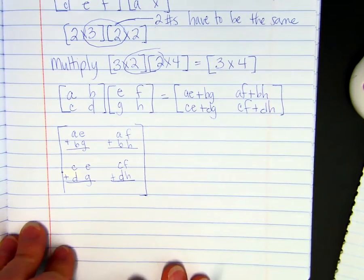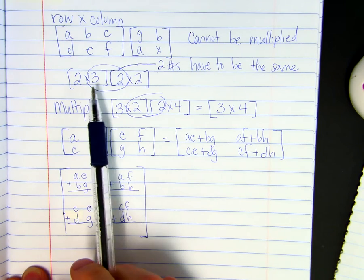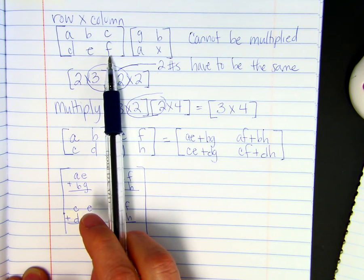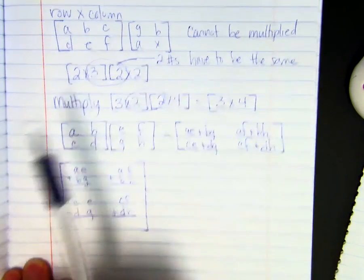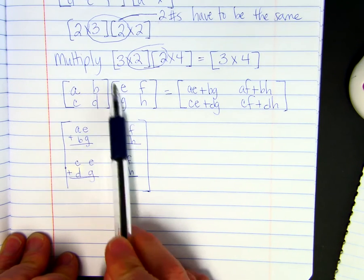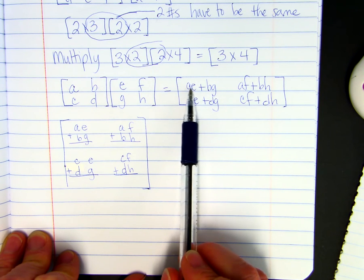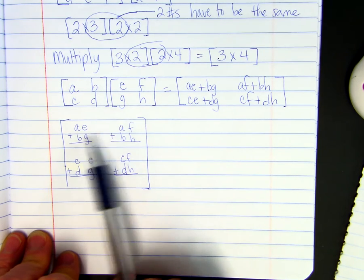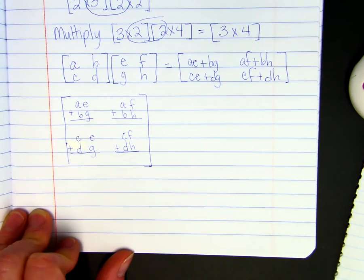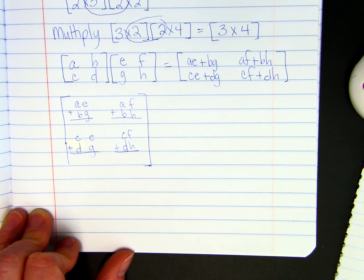Lesson 105, part 2. Quick review of part 1: when multiplying matrices, the number of columns in the first one has to equal the number of rows in the second one. I gave an example of how to do it — you go across and down, multiply A times E and add B times G. So AE plus BG. I showed it two different ways where you could take a row and turn it into a column. I wanted to give an example using real numbers, not just letters.